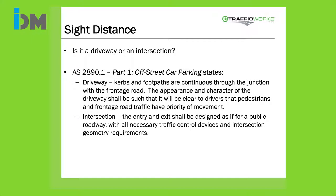Which sight distance applies comes down to whether it's a driveway or an intersection. The Australian Standard for Off-Street Car Parking states that a driveway has kerbs and footpaths continuous through the junction with the frontage road, and its appearance shall make clear that pedestrians and frontage road traffic have priority. At an intersection, the entry and exit shall be designed as for a public roadway with all necessary traffic control devices and intersection geometry requirements. So if it looks like an intersection, it needs the higher sight distance requirements.